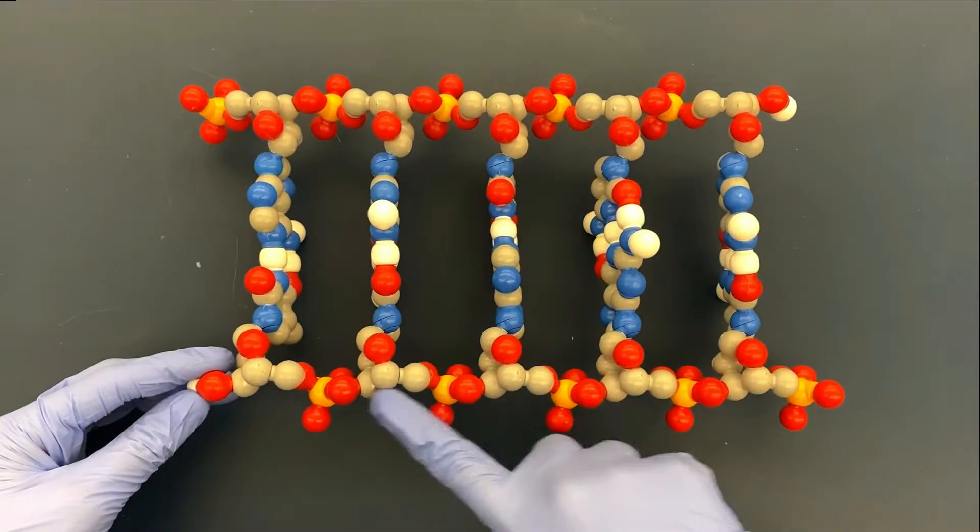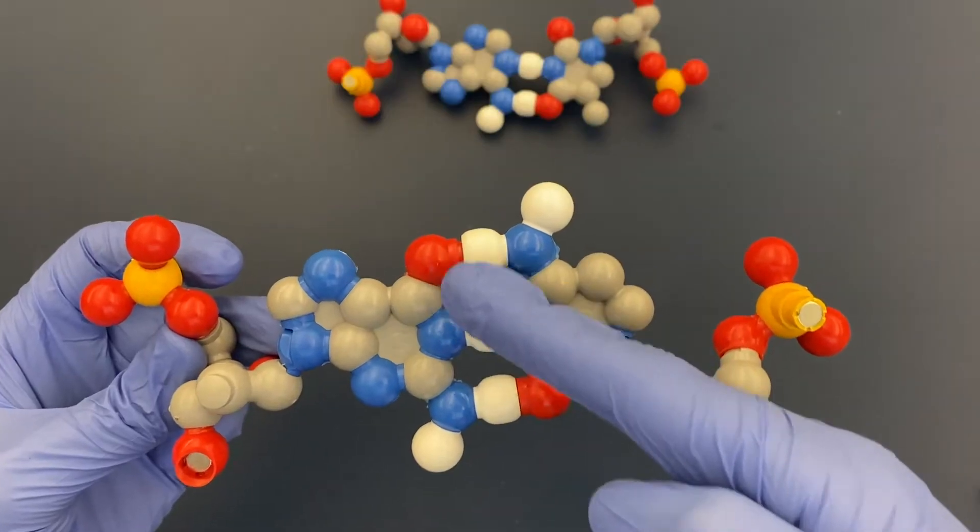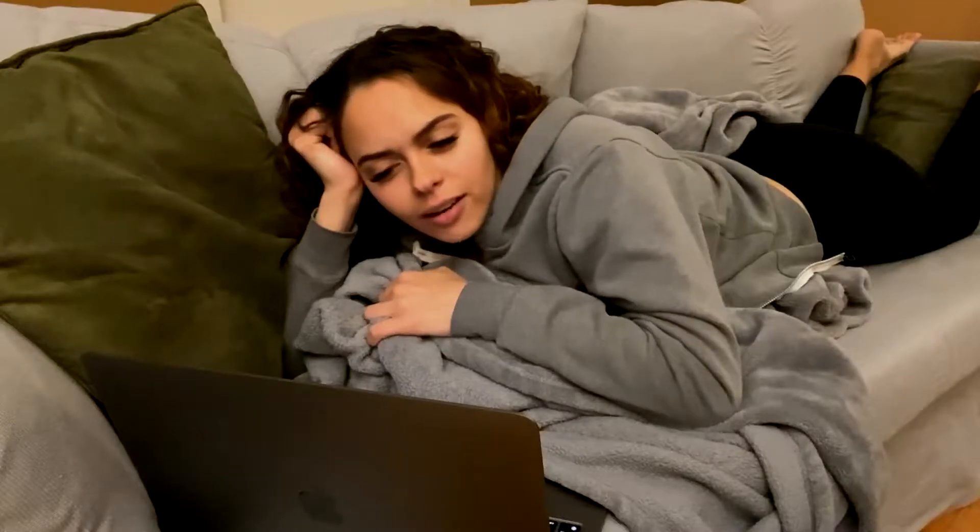Two chains side by side, sugar phosphate backbone, bases are inside. A binds with T, C and G sound right. Two or three H bonds keep this ladder tight. A always bonds with T. C always bonds with G. That's right. Hydrogen bonds in the middle. Backbones bound covalently.